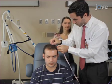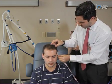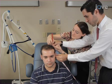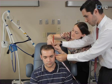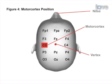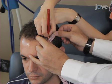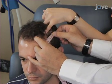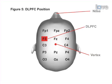To locate the primary motor cortex, or M1, calculate 20% of the auricular distance and measure this distance from the vertex along the auricular line. This spot should correspond to the C3 or C4 EEG location, and this is the location that will be stimulated in this video. To locate the dorsolateral prefrontal cortex, measure 5 cm forward from the M1 location. This should correspond to the F3 or F4 EEG location, as seen here.